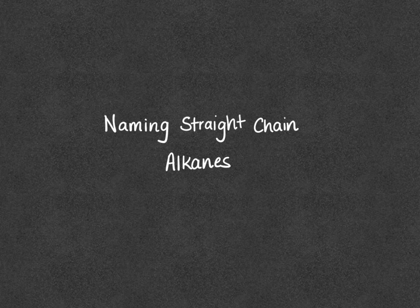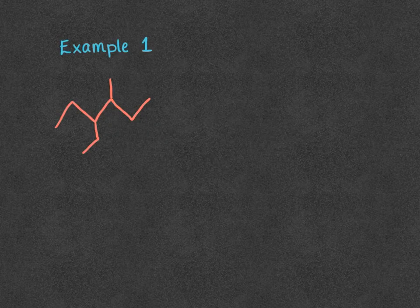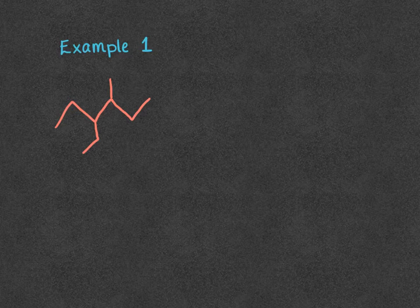In this video we're going to look at naming straight chain alkanes with a few examples. We have a straight chain alkane with branches coming off of it, and we're going to walk through the steps on how we name in a generic sense, and then we'll look at some specific examples where there may be some extra rules.